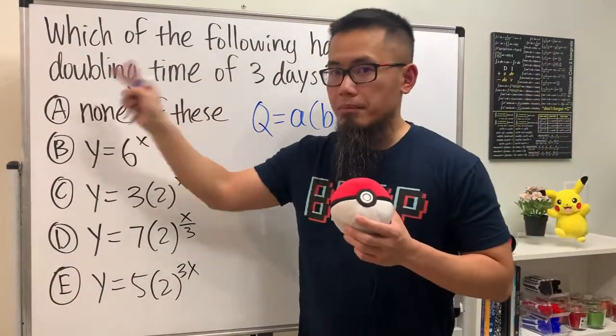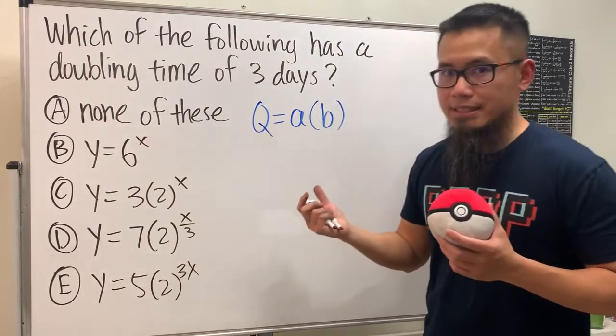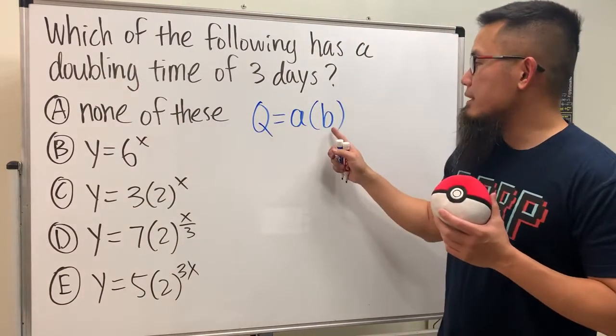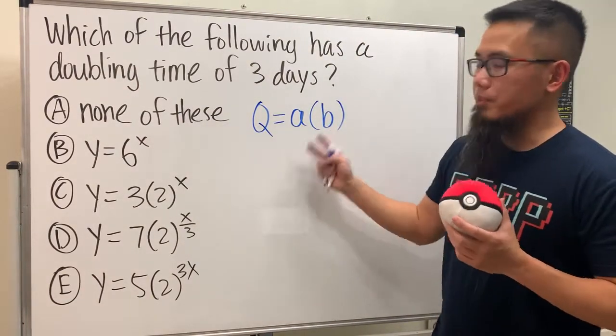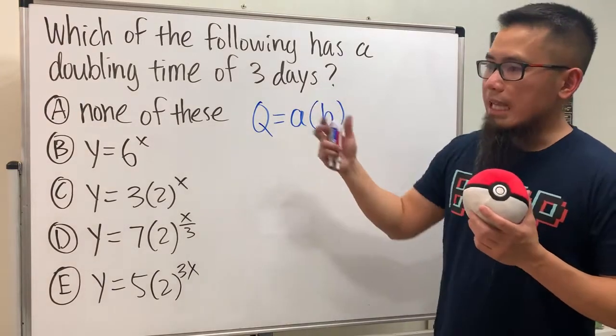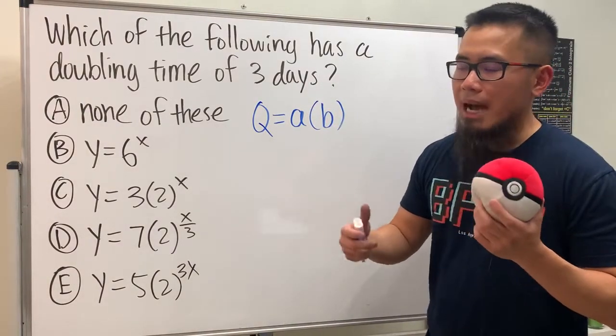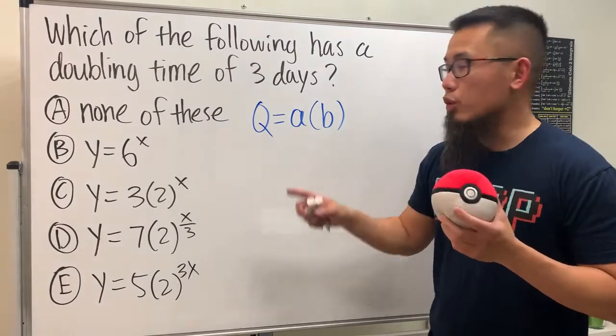So doubling means two for the base, so this right here is a growth factor of two, that's why I'm using b. If the question is asking you for like growth by 20 percent then you will do the one plus r.